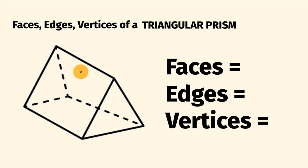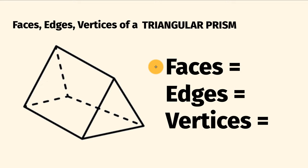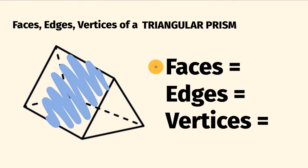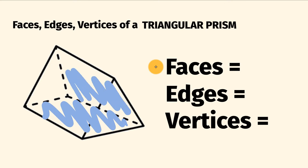So let's start with the number of faces — this is the amount of flat surfaces here. So we can go through and count these. We have these two triangular ends here, so one here and one face here. On top of that, we have the faces as we go around. So we have this one right here, as well as one on the bottom and one on this back part here. So all together, we have five faces.